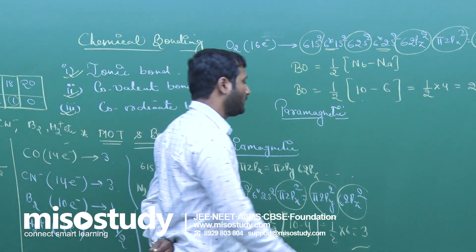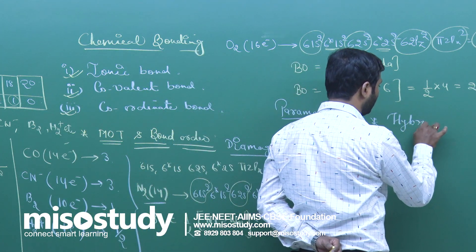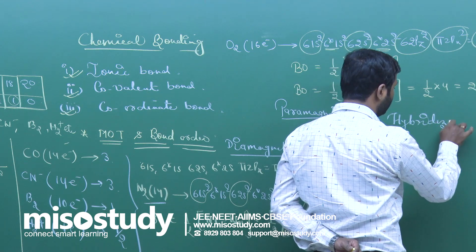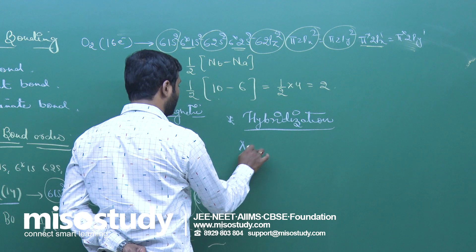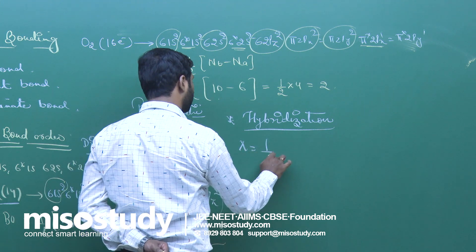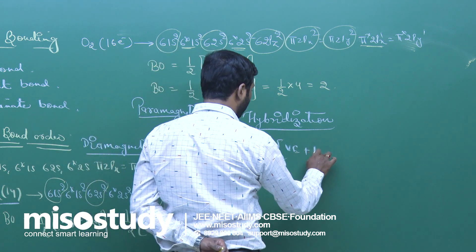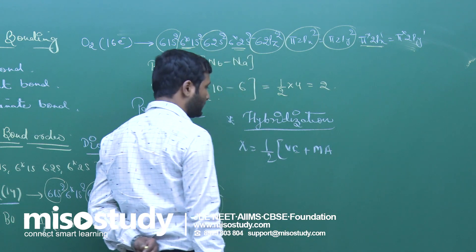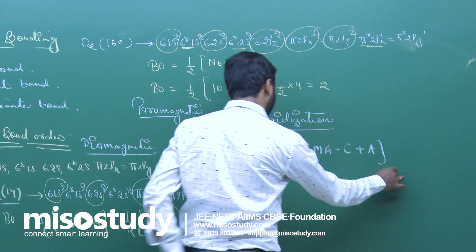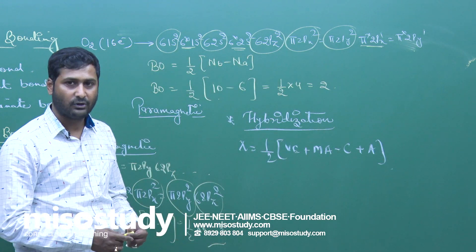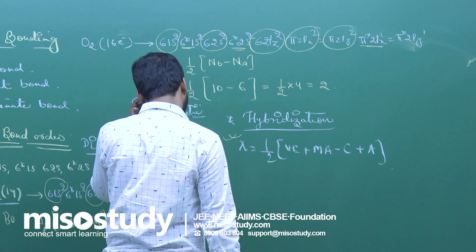Next: hybridization. What is hybridization? The formula for hybridization is: X = ½ × (valence electrons + monovalent atoms linked − charge on cation + charge on anion). By using this formula you can find the hybridization.